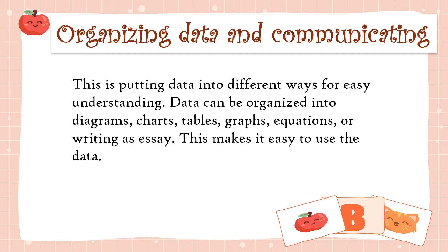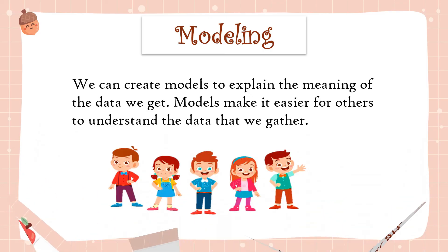Next, organizing data and communicating — this is putting data into different ways for easy understanding. Data can be organized into diagrams, charts, tables, graphs, equations, or writing. This makes it easy to use the data. Next, modeling — we can create models to explain the meaning of the data we get. Models make it easier for others to understand the data that we gather.